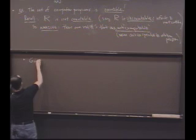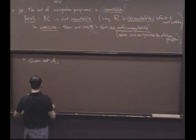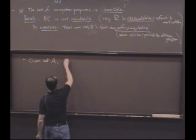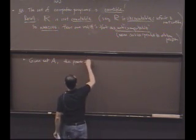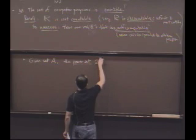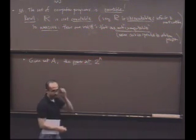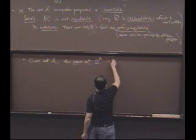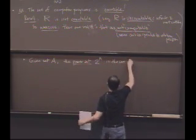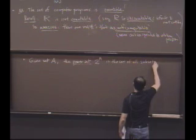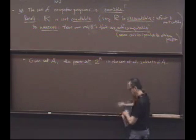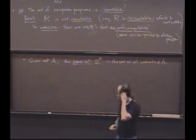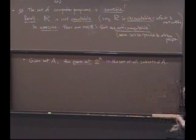Let me remind you what a power set is. So given some set A, the set of all subsets will be called the power set. It's denoted by a symbol, 2 to the A. And there's a reason for that. It is the set of all subsets of A.